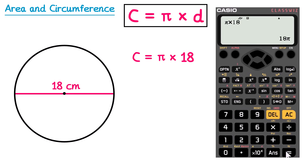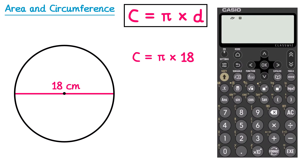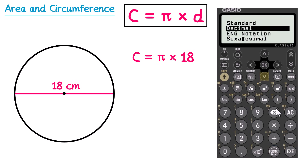I'll also show you how to do this on the newer style calculator. If you have a calculator that looks like this, it's a similar but slightly different process. The pi is above the number 7, so we press shift then 7, and pi appears on the screen. Then we press times 18, which also gives us 18 pi. To convert this to a decimal, press the format button, then the down arrow, then select decimal, and it gives the same answer as before.